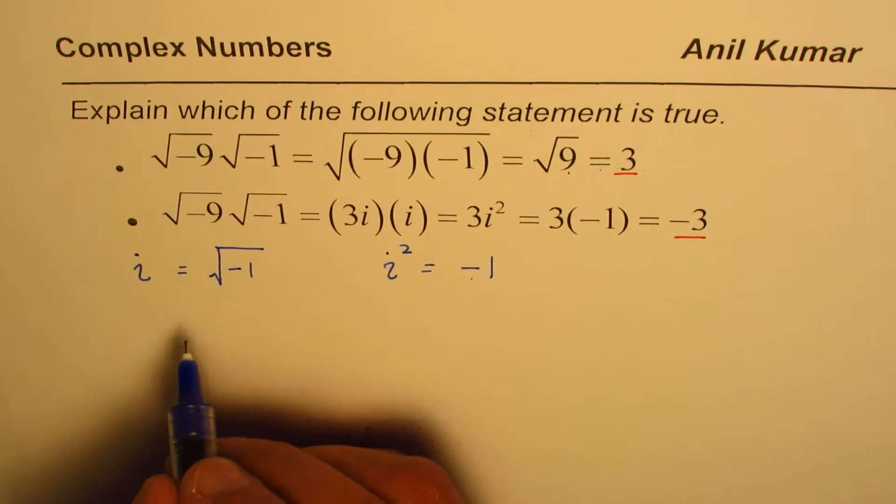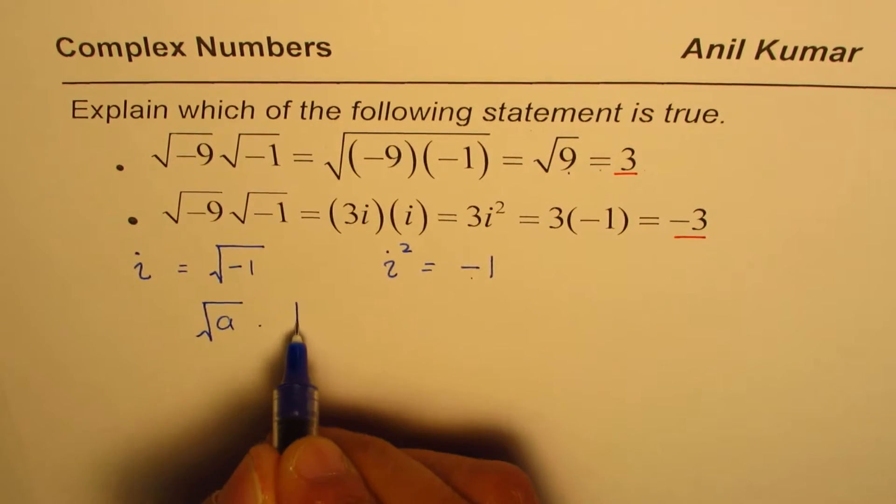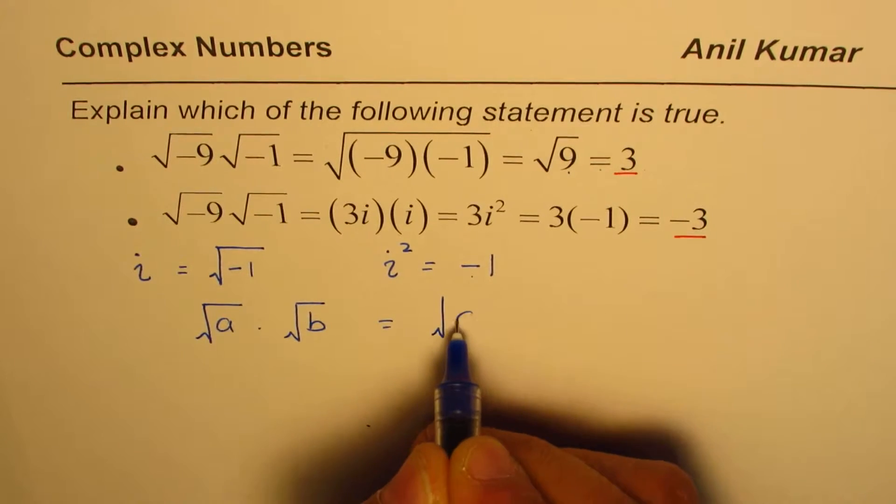It is important to note that whenever we have square root of a times square root of b, we can write this as square root of a times b.